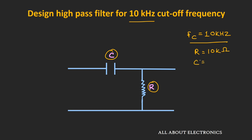You may ask why we chose R as 10 kΩ. If we connect this high pass filter to another circuit, the next stage should not be loaded by the resistance R. If R is too small (in ohms), the next stage might get loaded. If R is too large (in megaohms), the capacitor value becomes so small that parasitic capacitance comes into the picture, complicating the design. Therefore, R should be in the range of 1 to 10 kΩ.